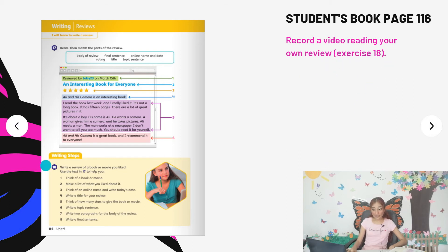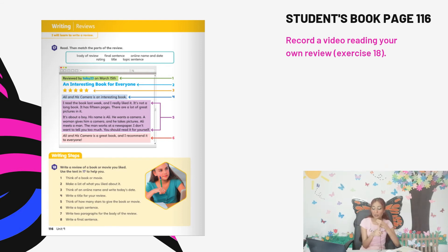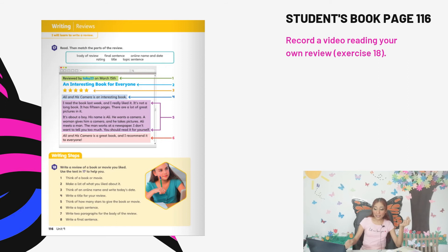Pay attention because you need to record a video reading your own paragraph that you are going to write in exercise 18. Based on this example, you can choose something you have at home — maybe a book, a movie, a video game, or a toy. You can choose that and write your own review about it. I'll let you choose whatever you want to base your review on — a movie, a video game, a game, a toy, a book, or a TV show.